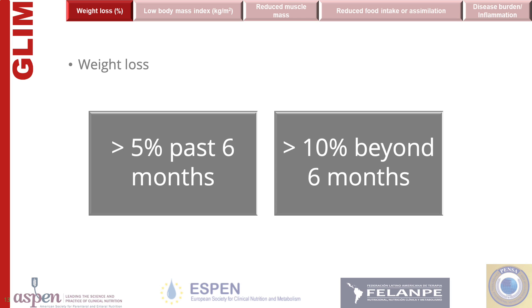Weight loss in the past six months is the first phenotypic criteria. Two cut points are used. Greater than 10% weight loss of usual body weight in the past six months indicates severe malnutrition.